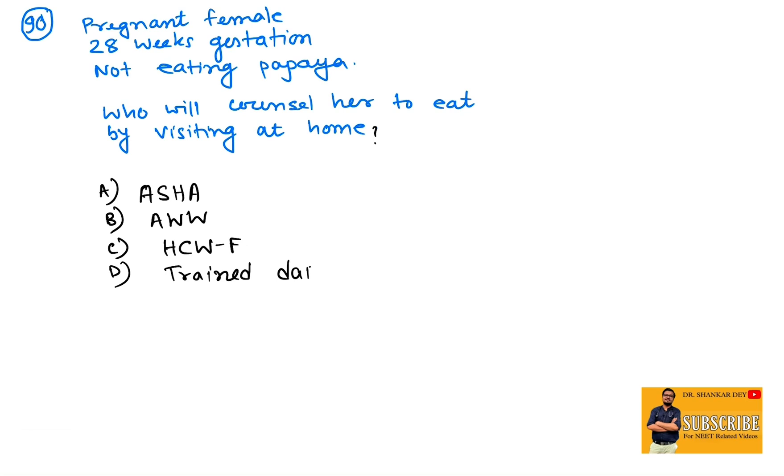Coming to question number 90: pregnant female at 28 weeks gestation not eating papaya or orange color food, who will counsel her to eat by visiting at home? This is a controversial question. As here it is written 'by visiting at home,' according to my opinion, the answer should be ASHA, because ASHA usually visits home. But nutritional care during antenatal period is usually done by Anganwadi worker or ICDS, but Anganwadi worker or ICDS worker do not visit home on a regular basis. I think the answer will be either ASHA or Anganwadi worker. I am still confused. Please do give your opinion in the comment section.